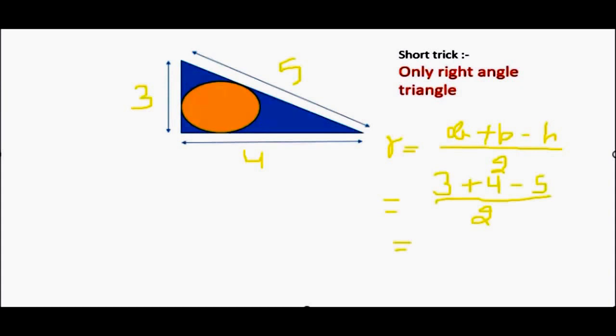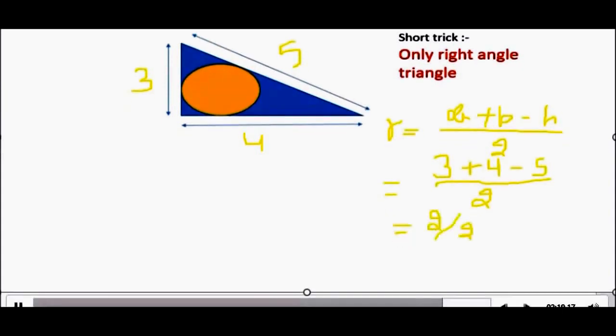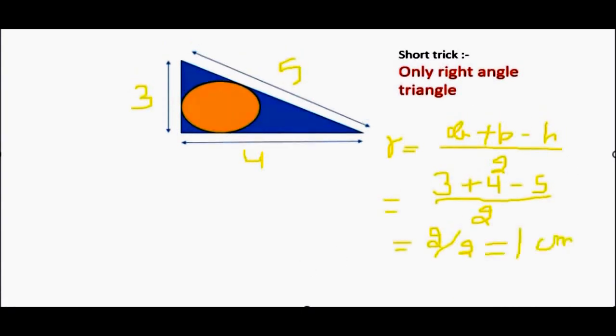As you are seeing, it is 3 plus 4 minus 5 divided by 2, that is equal to 2 divided by 2, that is 1 cm. Which is exactly the same we calculated before. Try yourself.